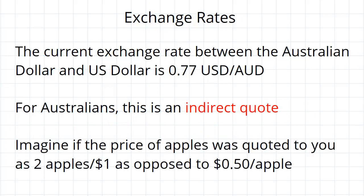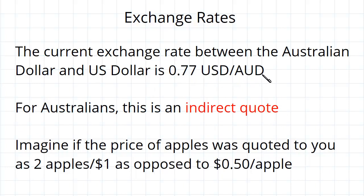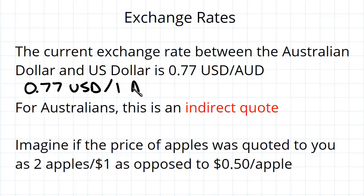Let's have a look at an example. The current exchange rate for the Australian dollar and the United States dollar is given as 0.77 US dollars per Australian dollar. We can expand this out: 0.77 USD / 1 AUD — meaning these two are equivalent: 0.77 US dollars is the same as 1 Australian dollar. We call this an indirect quote.